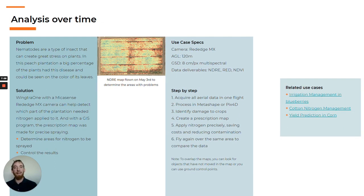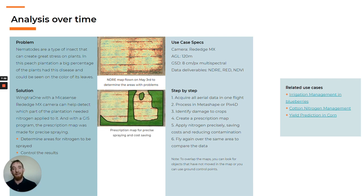In some cases, flying several flights and gathering multispectral information over spans of time can be useful to establish and then check the results of an action plan based on preventative drone data. In this case, for example, there was a problem with nematodes in a peach plantation. The NDRE map showed exactly which plants needed nitrogen, so a prescription map was created to spray the chemicals precisely.